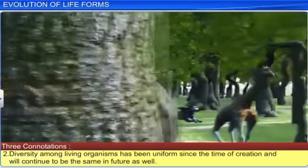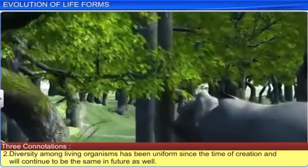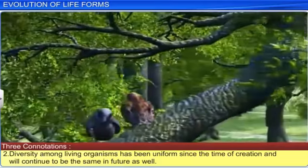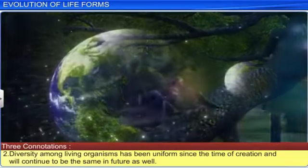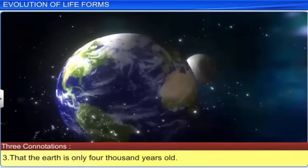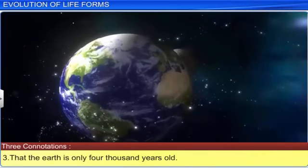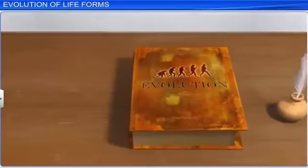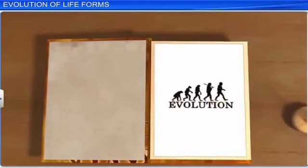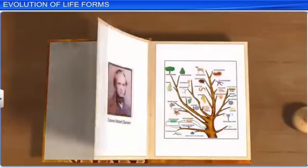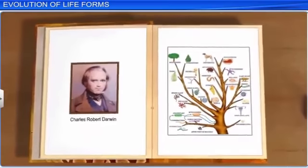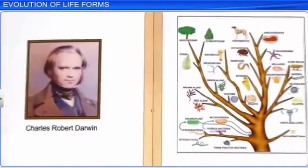Second, diversity among living organisms has been uniform since the time of creation and will continue to be the same in future as well. Third, that the earth is only 4,000 years old. These ideas faced opposition in the 19th century, when English naturalist Charles Robert Darwin suggested that complex organisms have evolved from simple ancestors.